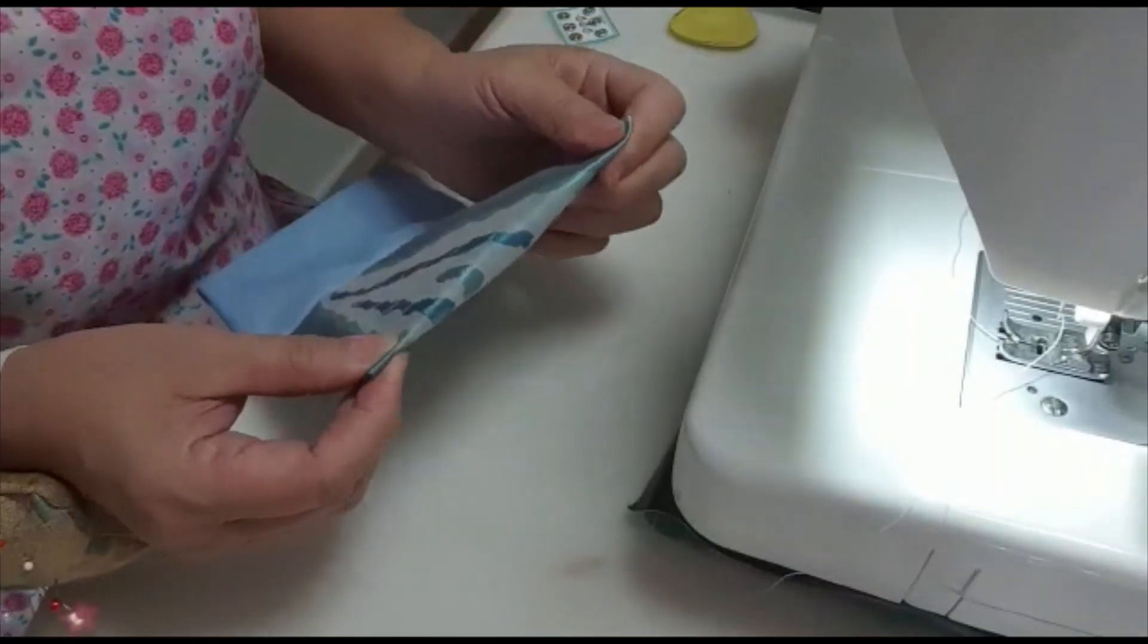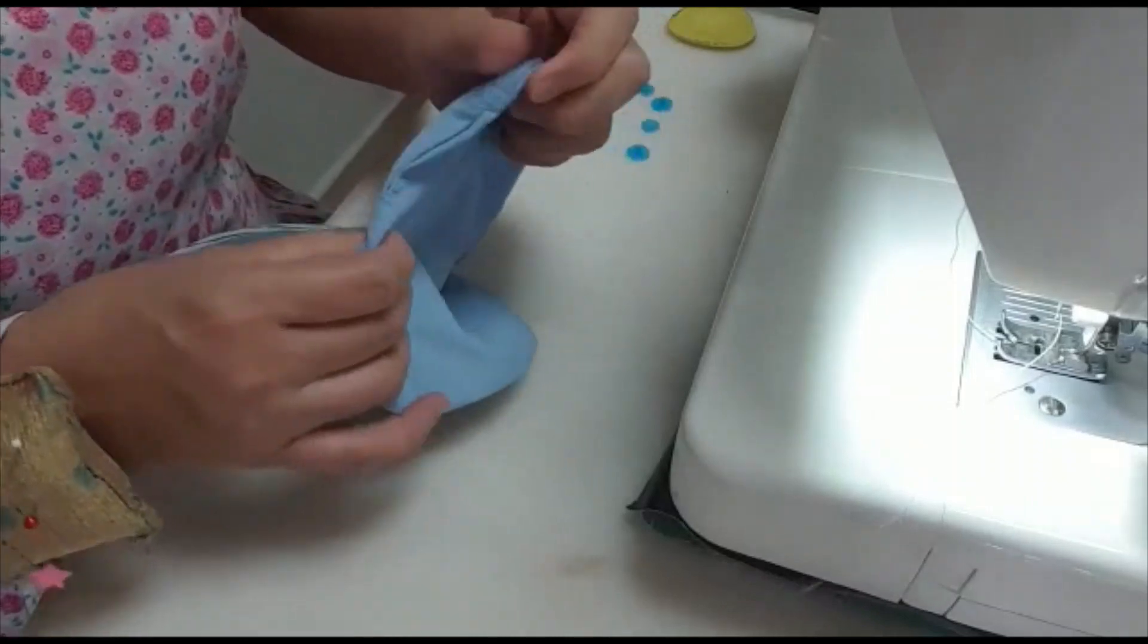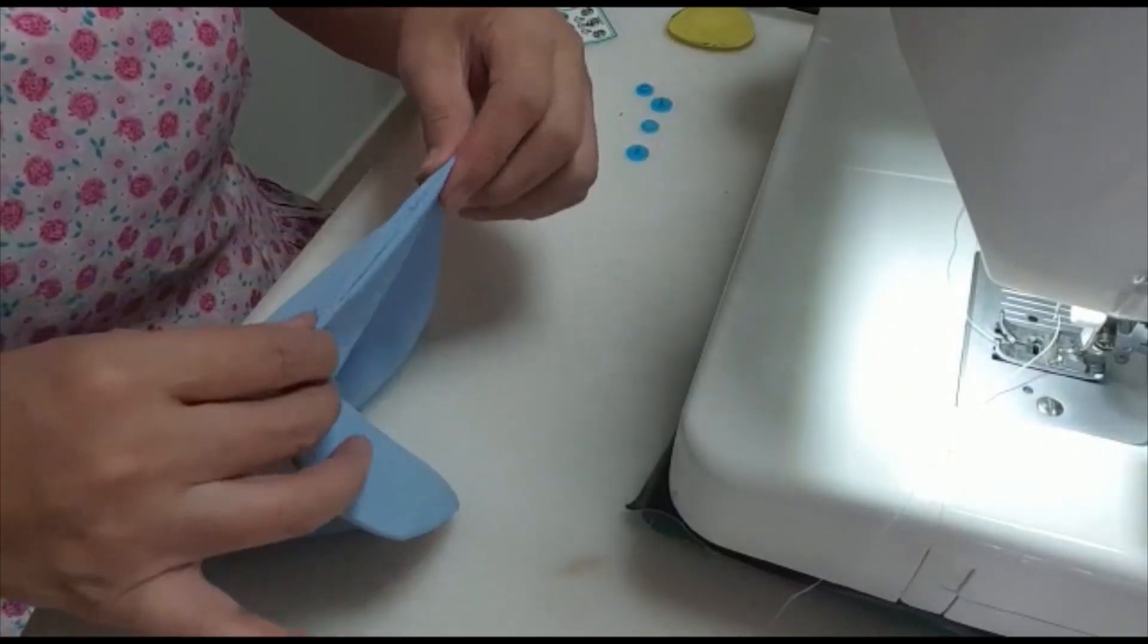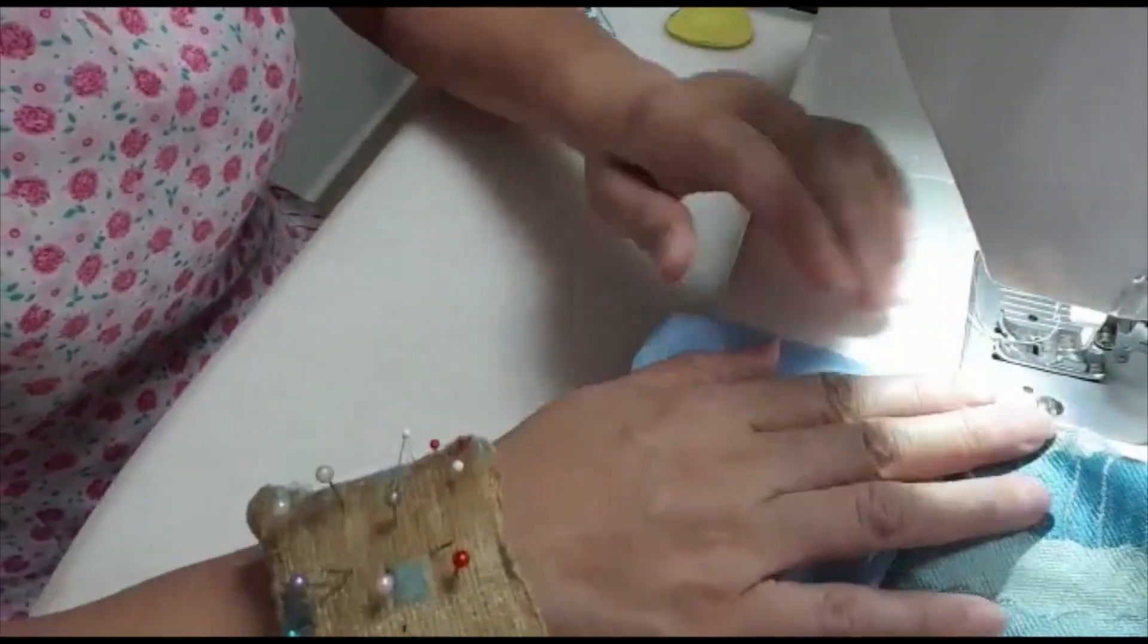Make the corner sharp. The next step is you have to sew back this little hole to seal it. Just like that, sew a line on top.